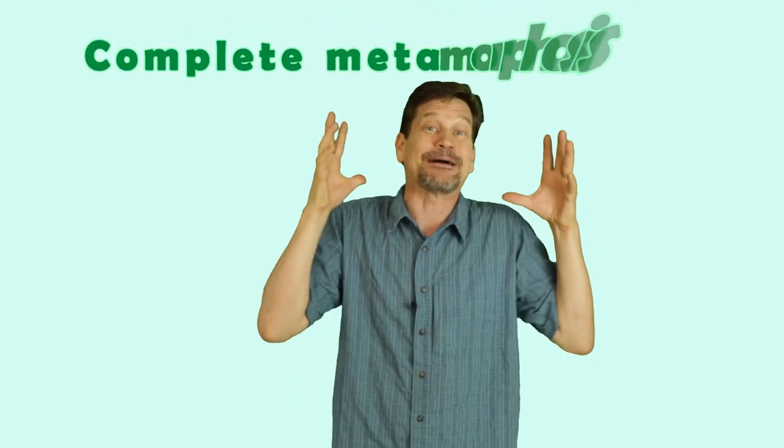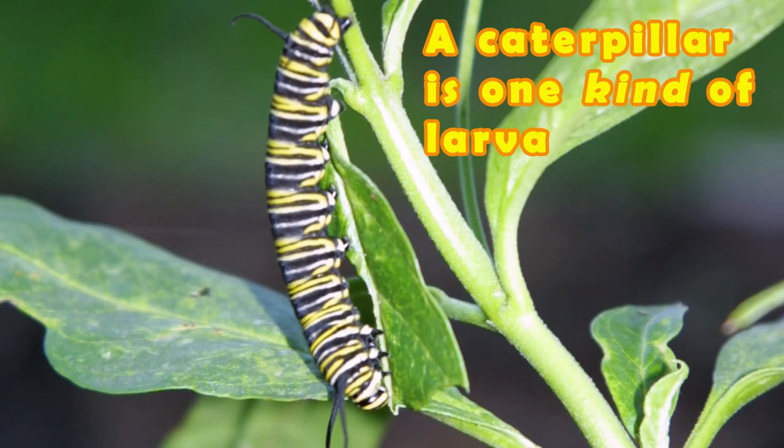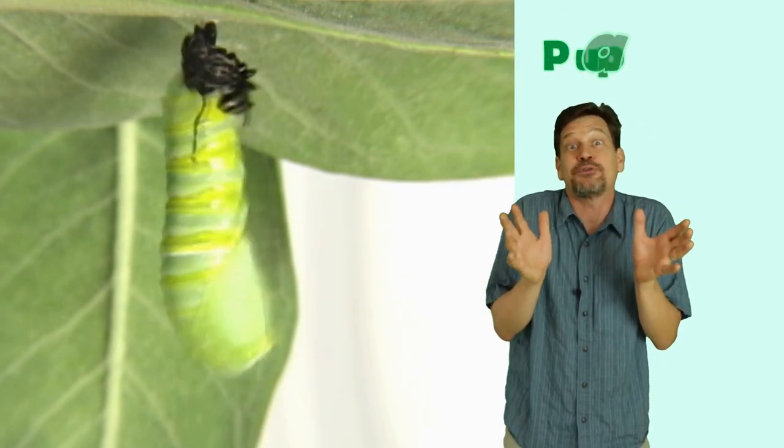Some of them go through a big change, some of them go through a little change. The ones who go through a big change like a butterfly goes through a complete metamorphosis. It starts off as a little larva which looks really different from the grown-up form. Then they go to a stage called a pupa.